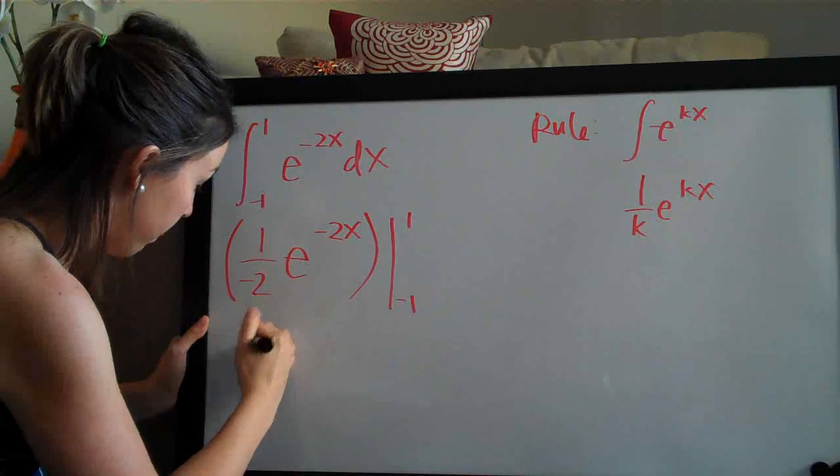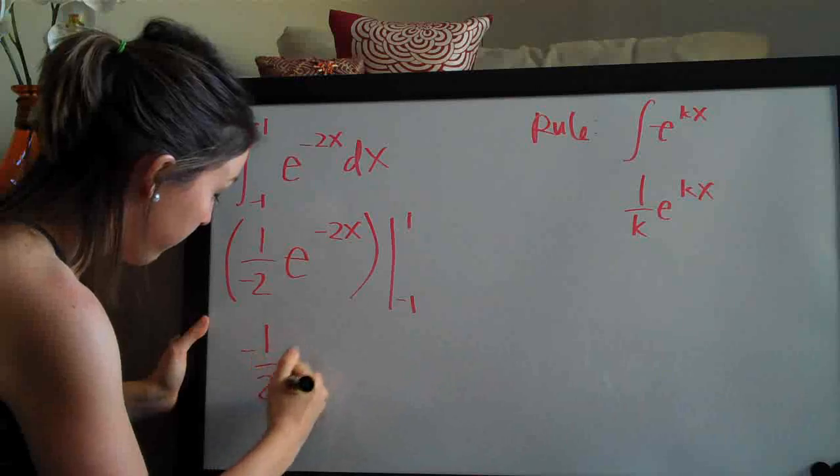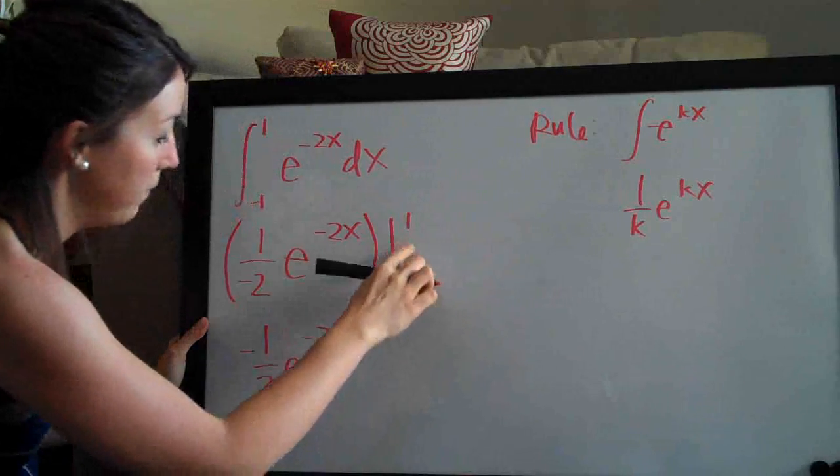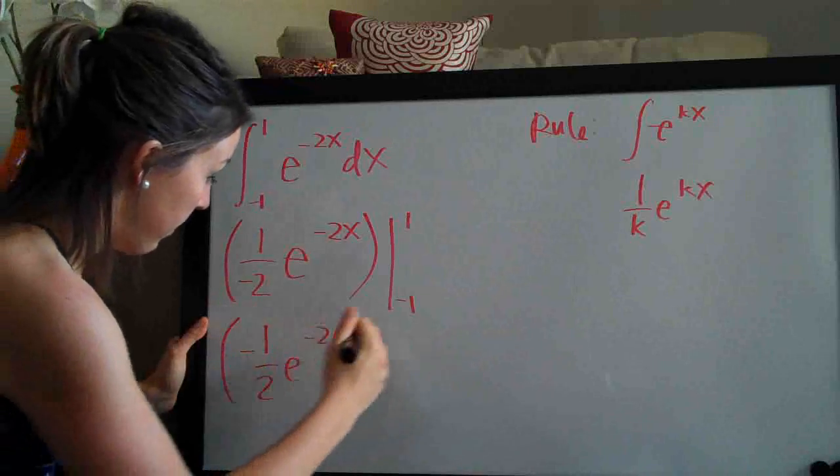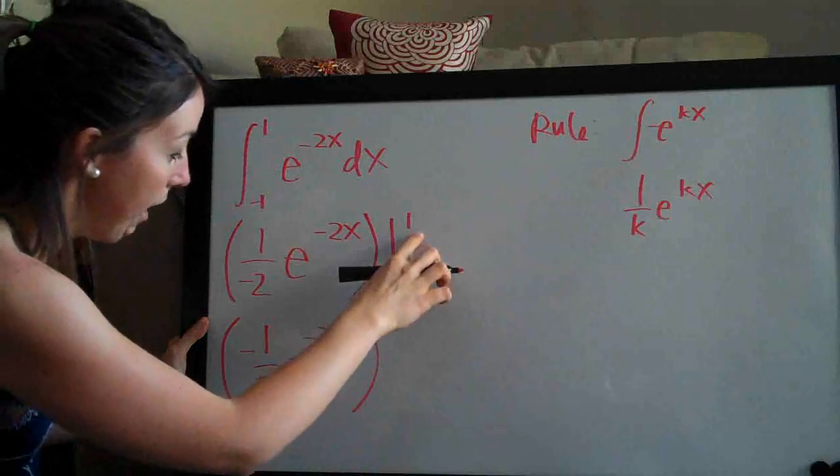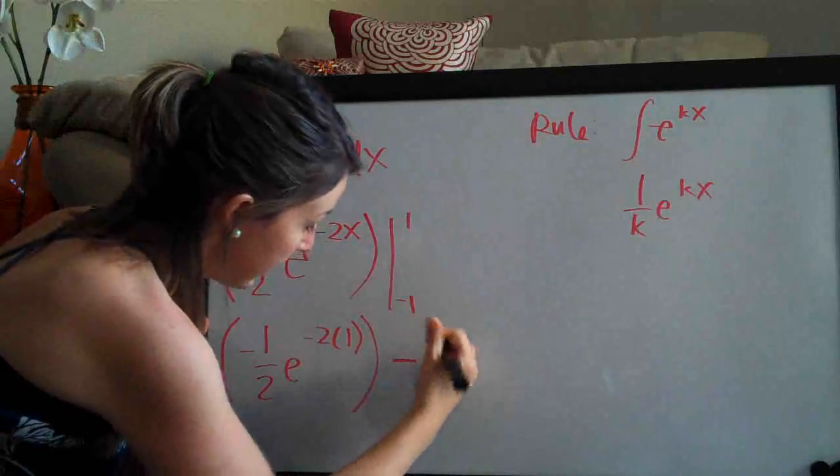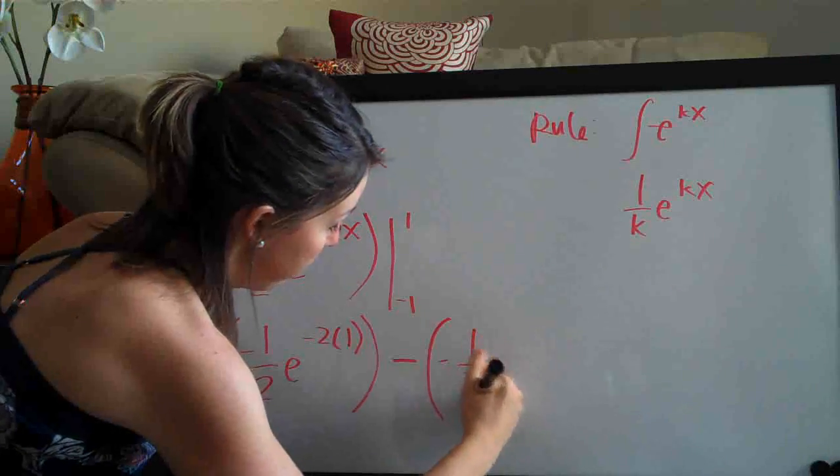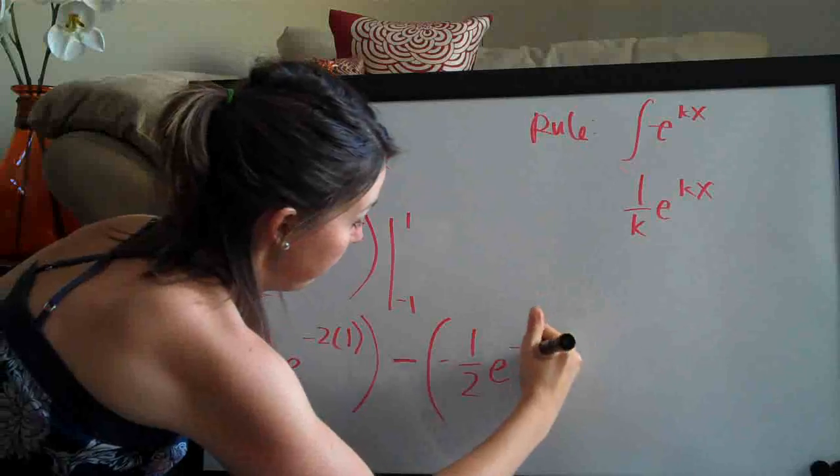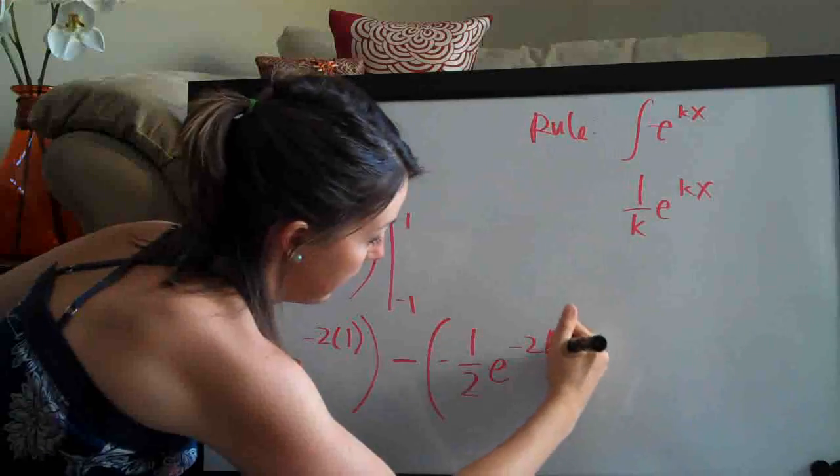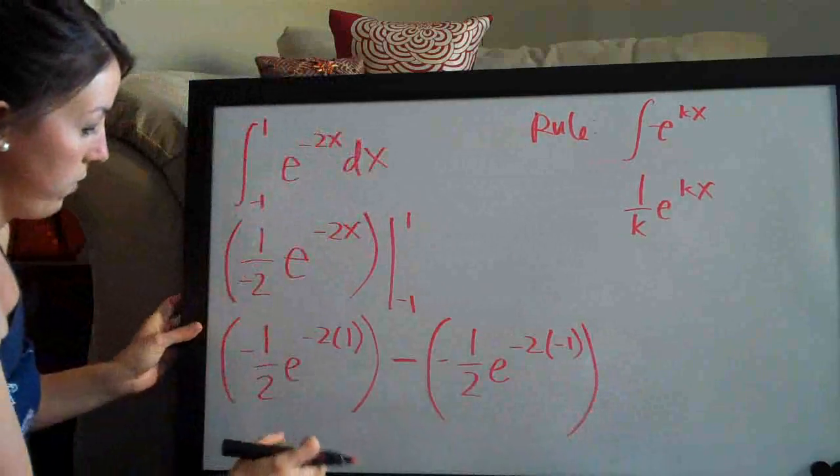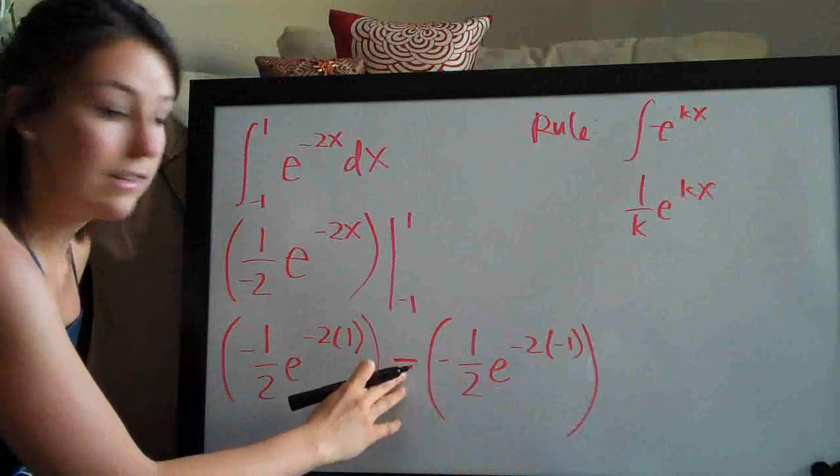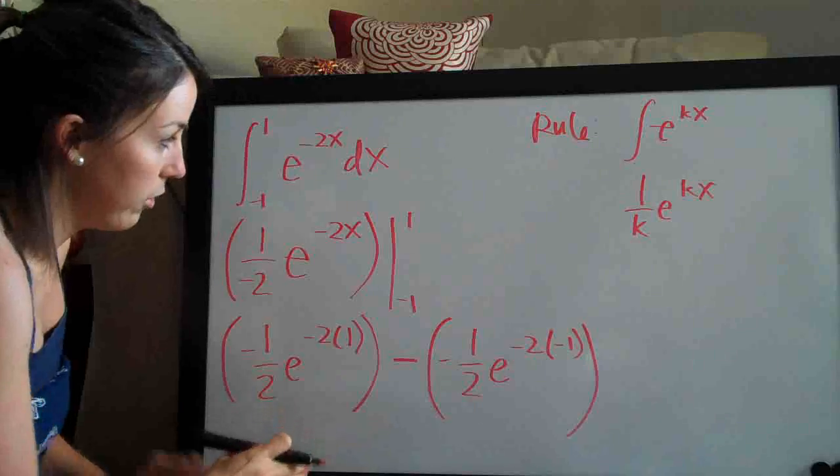So we have negative 1 half e to the negative 2 and we're plugging in here for x, of course, so we plug in 1. So that's the top and then we say minus and we plug in negative 1. So we have negative 1 half e to the negative 2 and then again plugging in negative 1. So we always do the top minus the bottom. This is always a minus sign. The top number is always plugged in first.